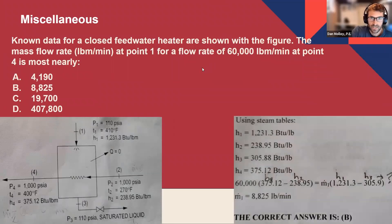Okay. Three of three. Known data for a closed feedwater heater are shown with the figure. The mass flow rate in pounds per minute at point 1 for a flow rate of 60,000 pounds per minute at point 4 is most nearly what?